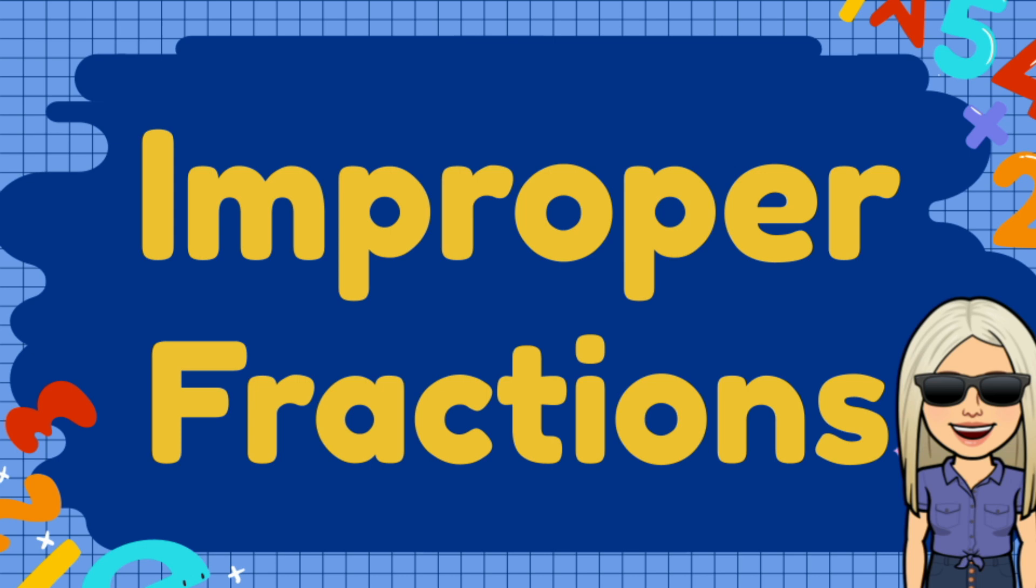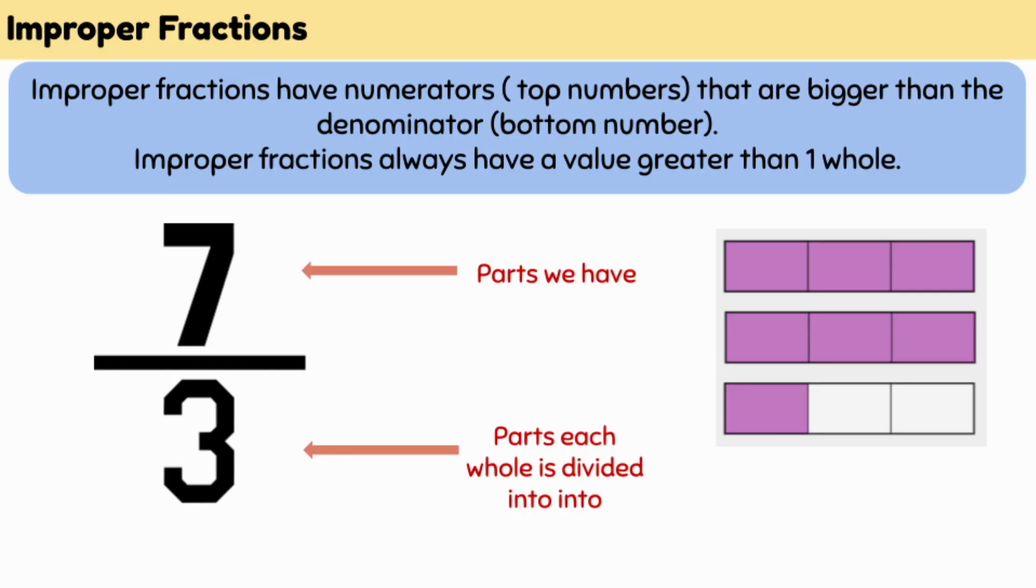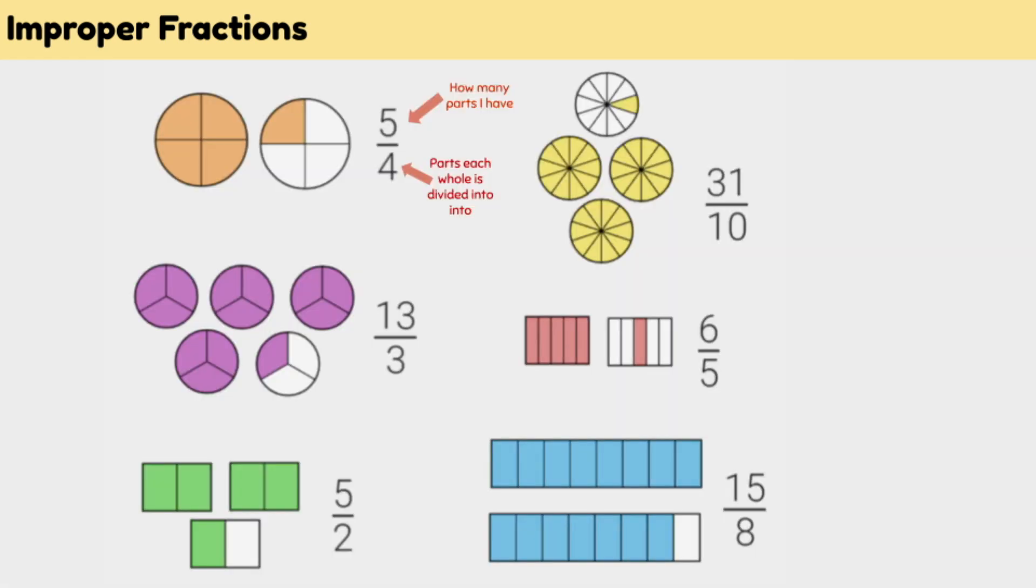What are improper fractions? Improper fractions have numerators that are bigger than the denominator. That means their top number is always bigger than their bottom number. Improper fractions always have a value greater than 1.